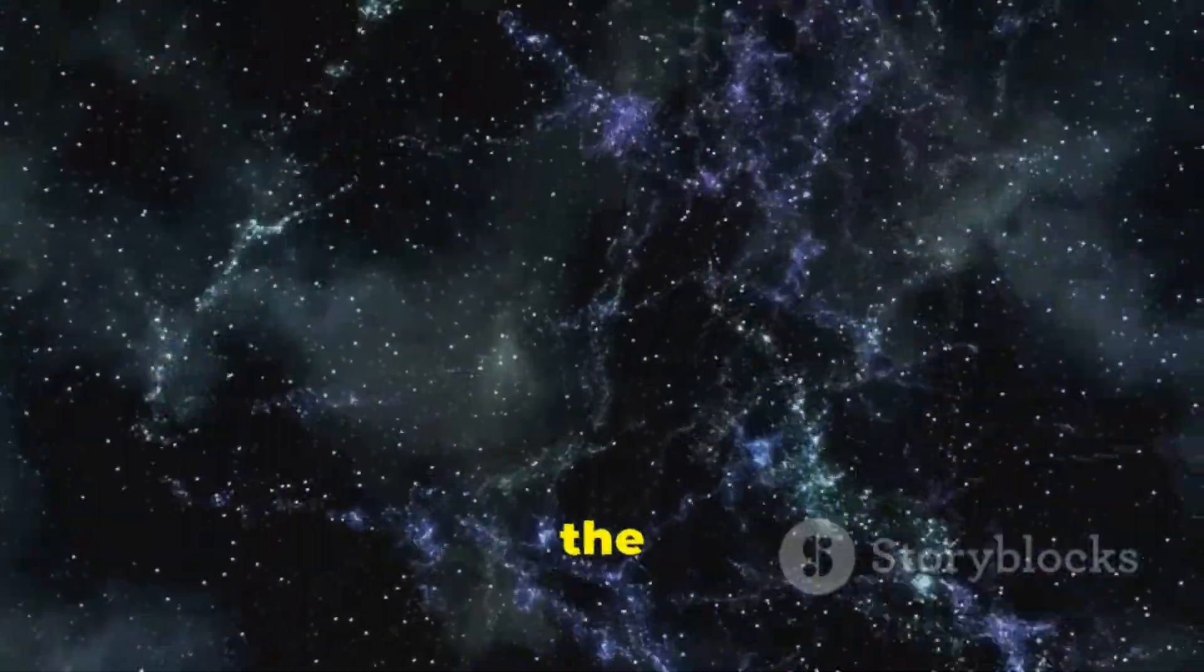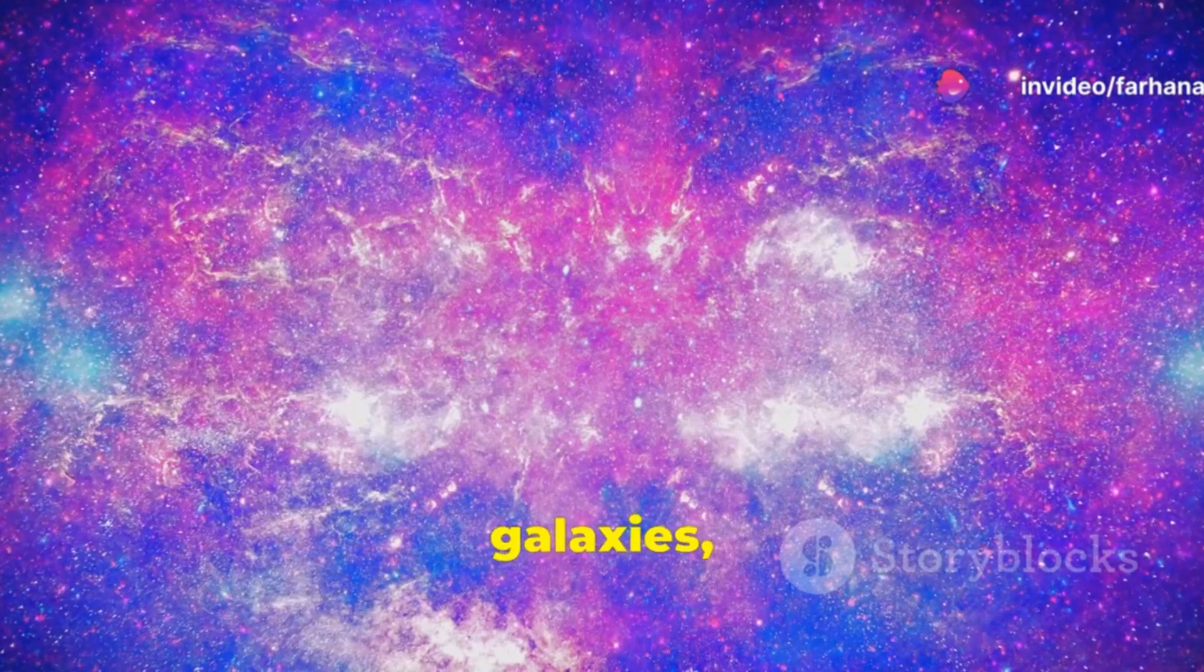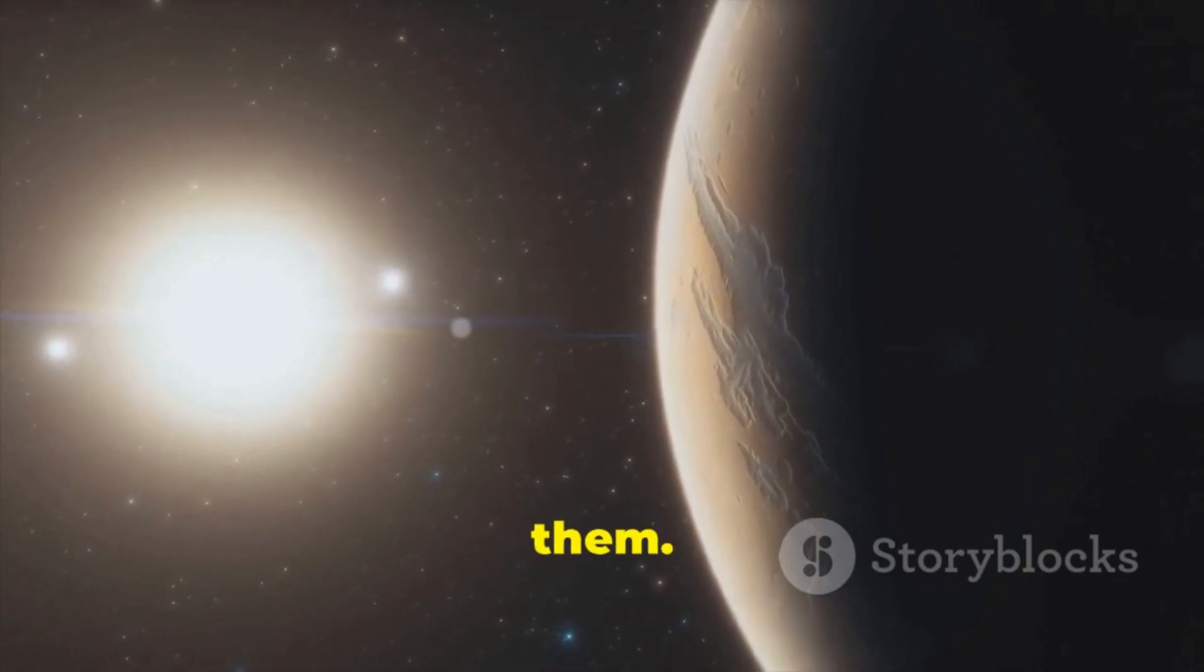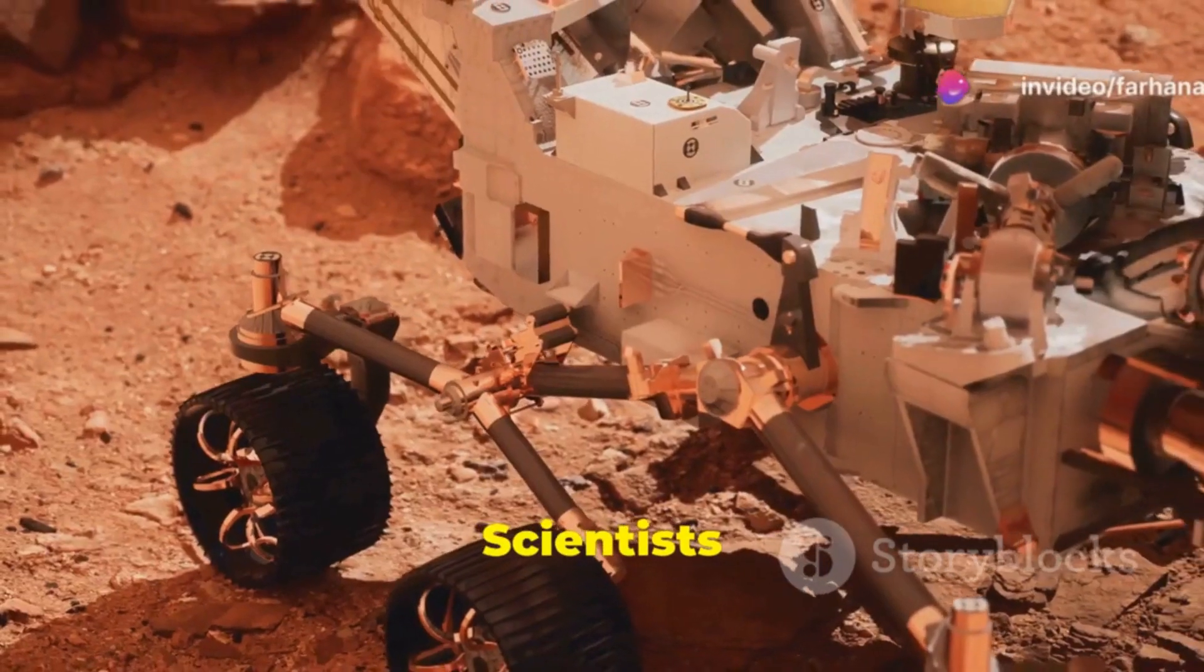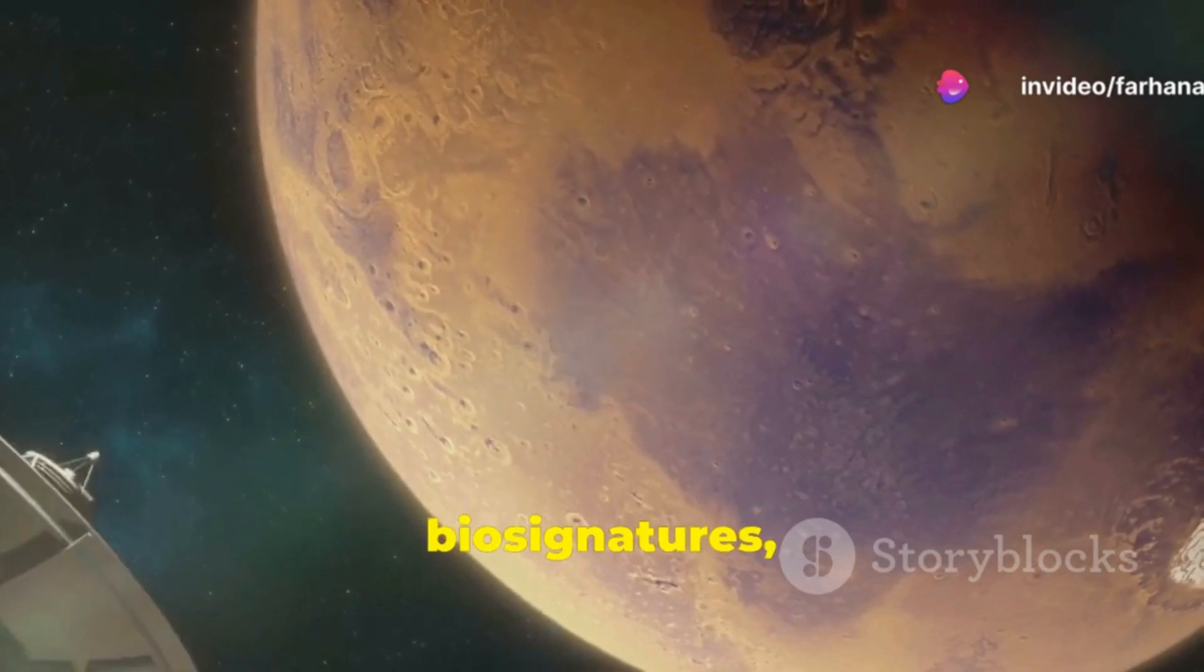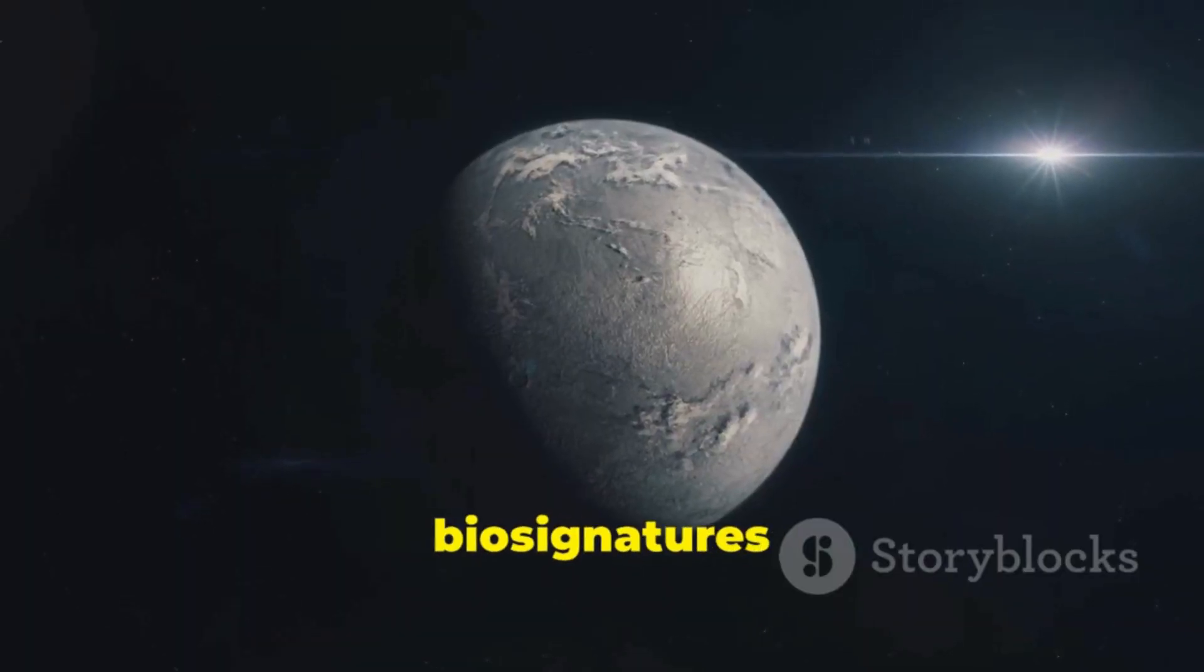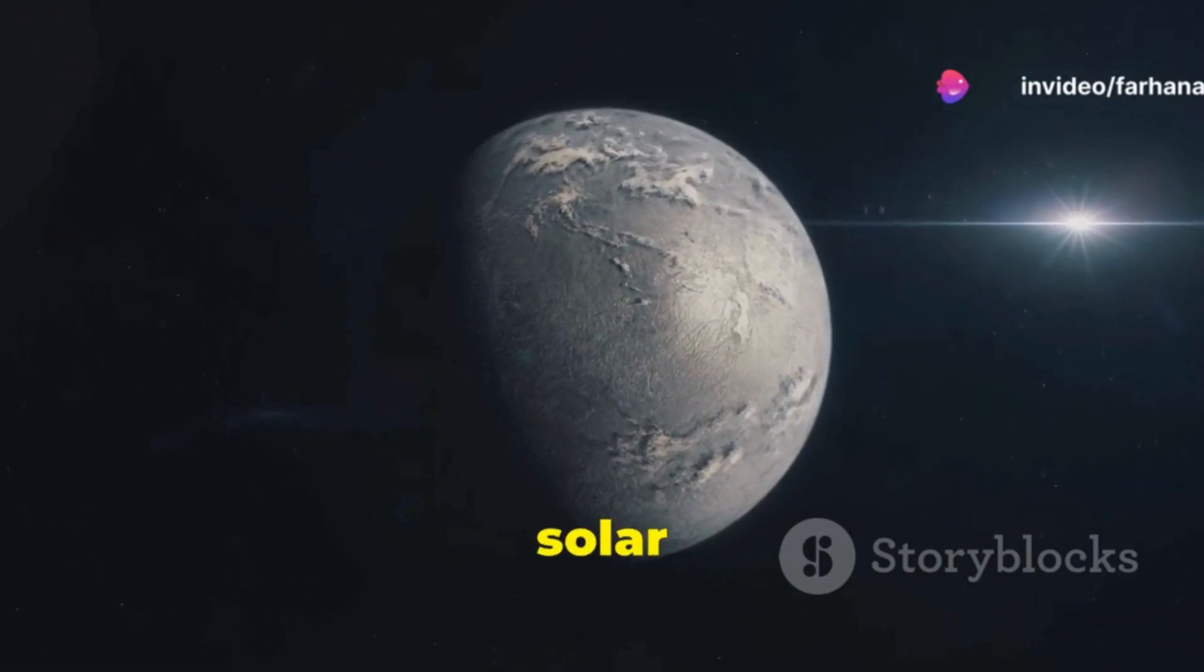The sheer vastness of the universe suggests that life may exist elsewhere. There are billions of galaxies, each with billions of stars. Many of these stars likely have planets orbiting them. Some of these planets may have conditions suitable for life. Scientists are searching for signs of life beyond Earth. They are looking for biosignatures, which are chemical or physical indicators of past or present life. These biosignatures could be detected in the atmospheres of exoplanets or in the icy moons of our solar system.